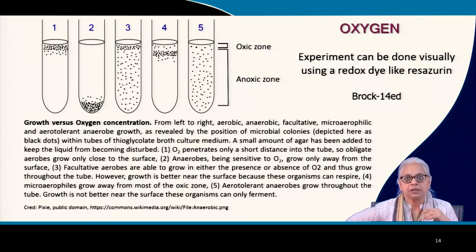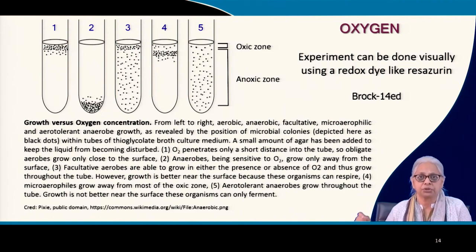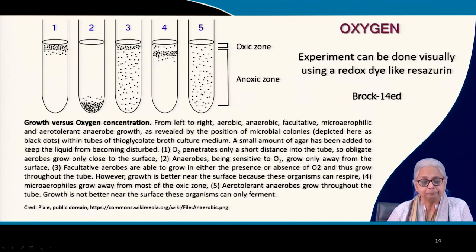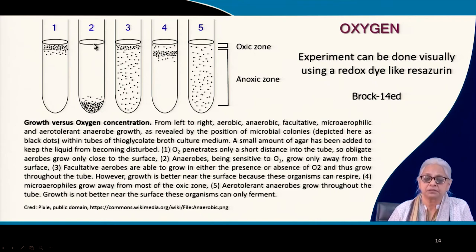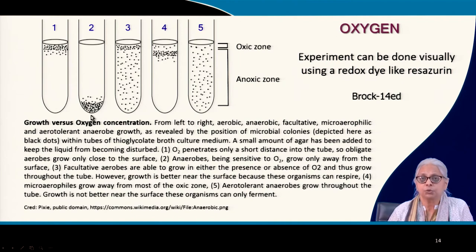We then come to the last factor — oxygen. Here we see clustering of different types of bacteria in response to an oxygen concentration gradient across five test tubes. Oxygen concentration is highest at the surface, so aerobic bacteria cluster at the surface. Anaerobic bacteria cluster at the bottom, as far away from oxygen as possible, where oxygen concentration is lowest as long as the tube is not mixed.